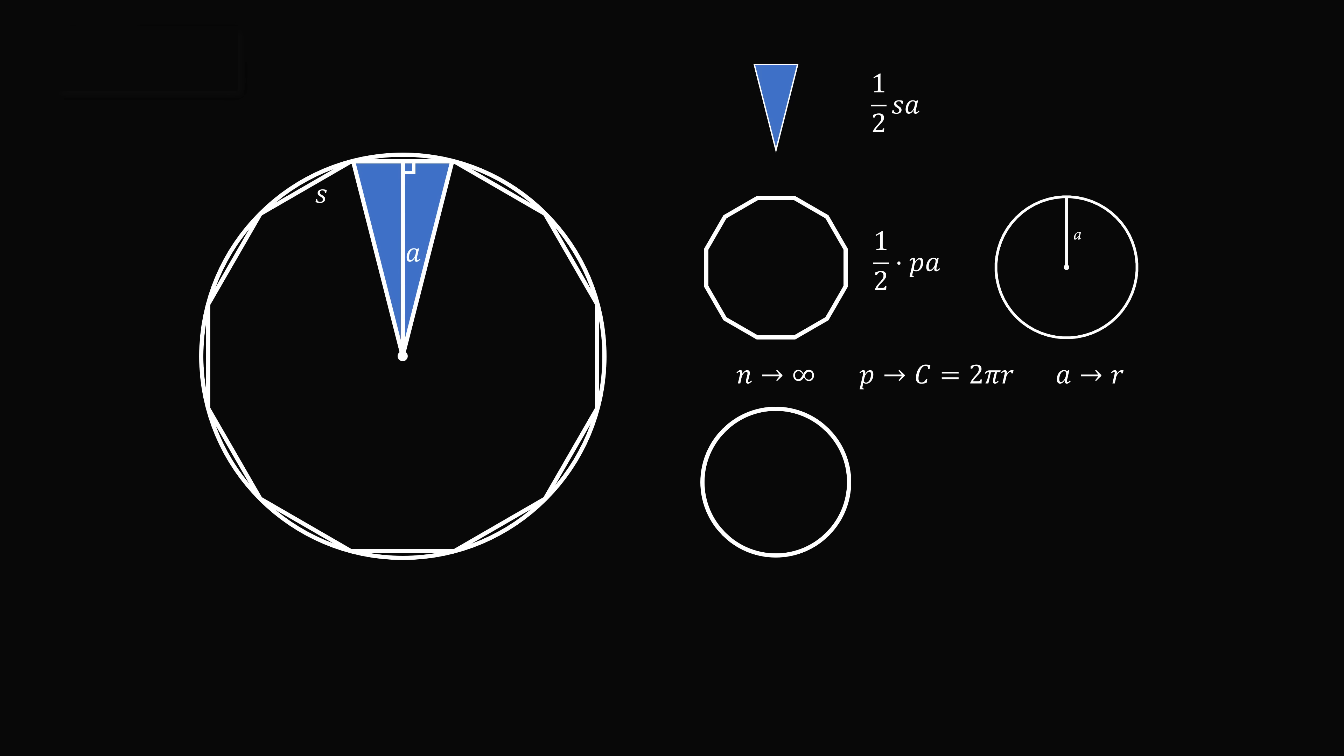So substituting those into the formula gives one half times c times r. We substitute in that c is equal to 2 pi r. The one half and the two will cancel, and the r and r will multiply to become r squared. So we get the area of the circle is equal to pi times r squared. Wow!